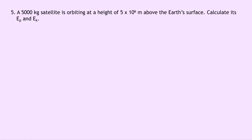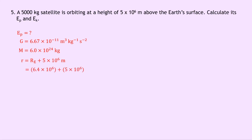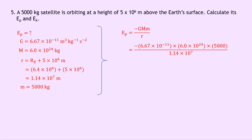Question 5: a 5000 kilogram satellite is orbiting at a height of 5 times 10 to the 6 metres above the Earth's surface. Calculate its Ep and Ek. Working out Ep first: G is 6.67 times 10 to the minus 11, M is 6.0 times 10 to the 24 kilograms, and r equals the radius of the Earth plus 5 times 10 to the 6, giving 6.4 times 10 to the 6 plus 5 times 10 to the 6, which equals 1.14 times 10 to the 7 metres. Using Ep equals minus GMm over r gives minus 6.67 times 10 to the minus 11 times 6.0 times 10 to the 24 times 5000 over 1.14 times 10 to the 7, which equals minus 1.76 times 10 to the 11 joules.